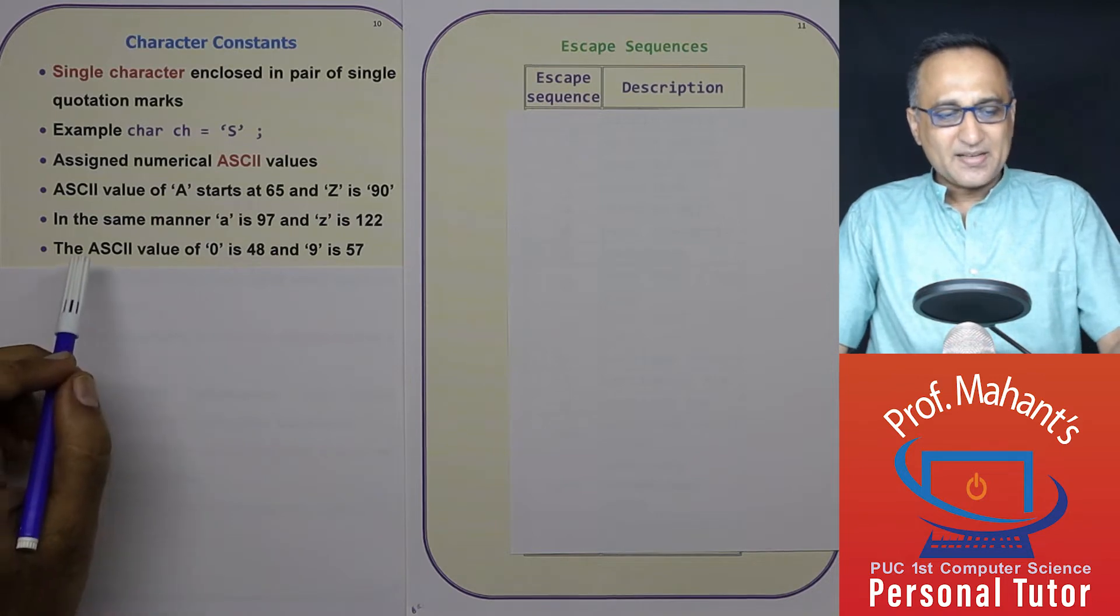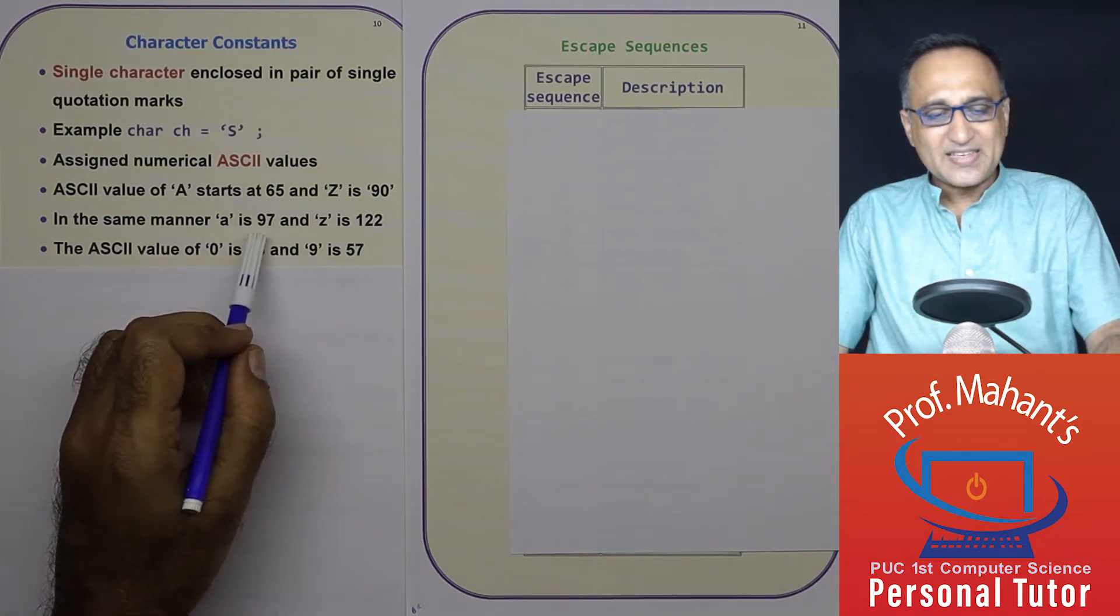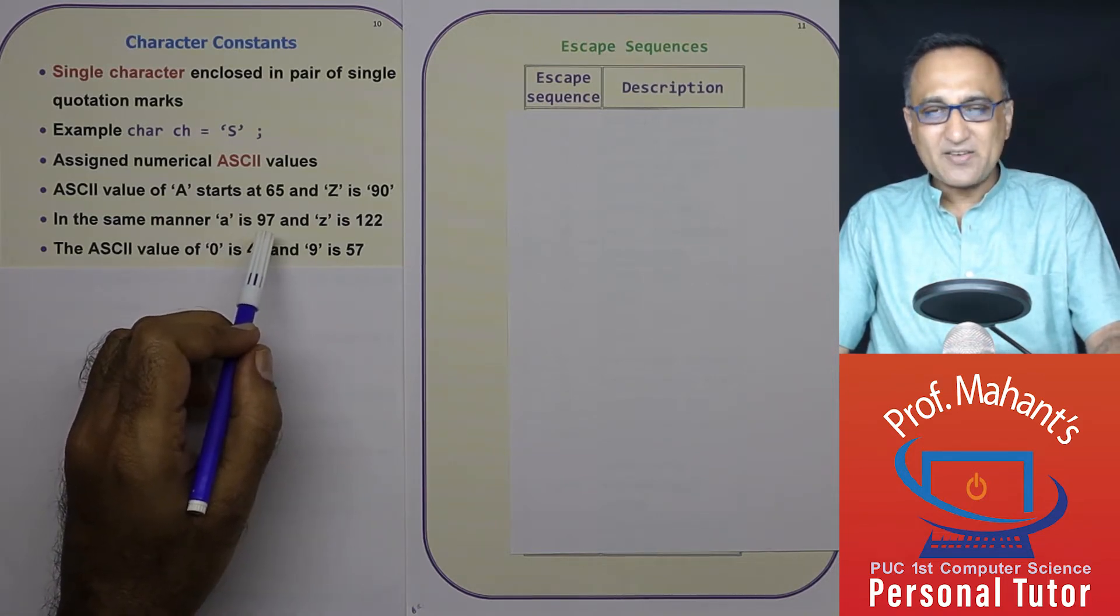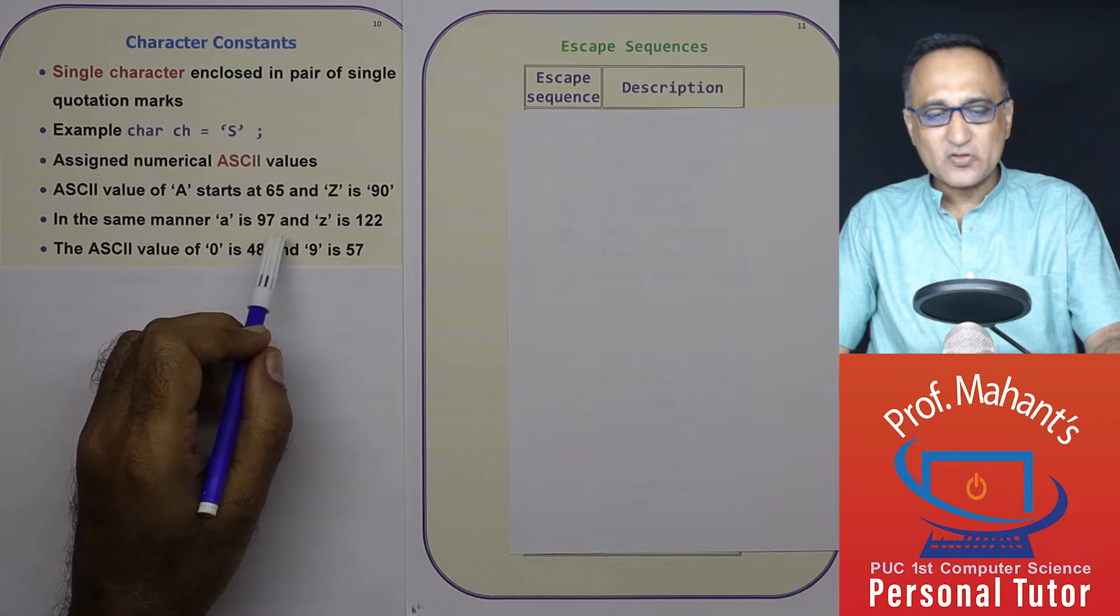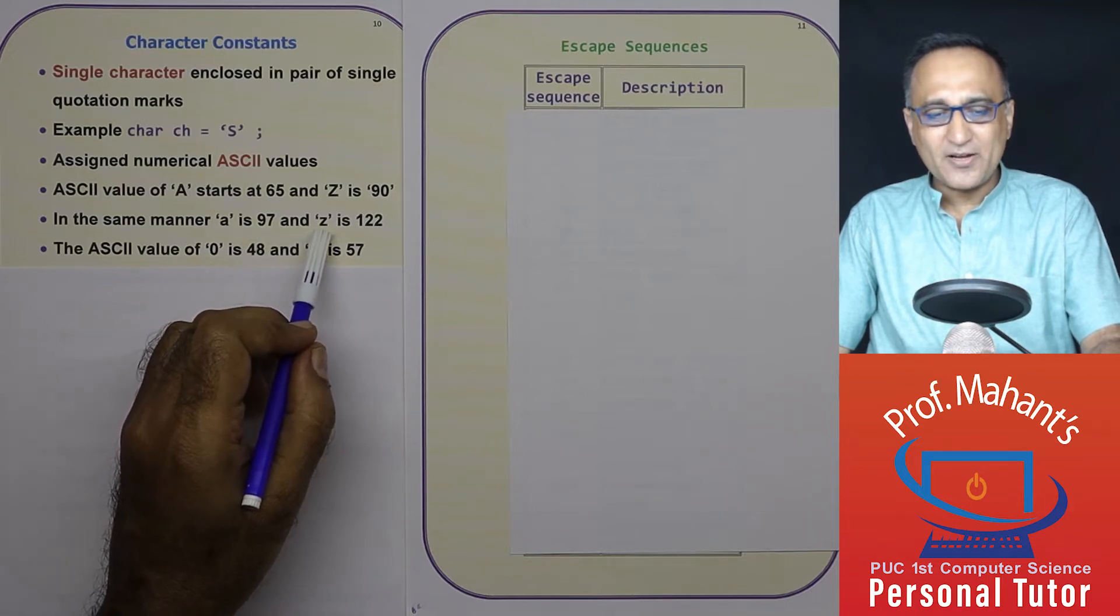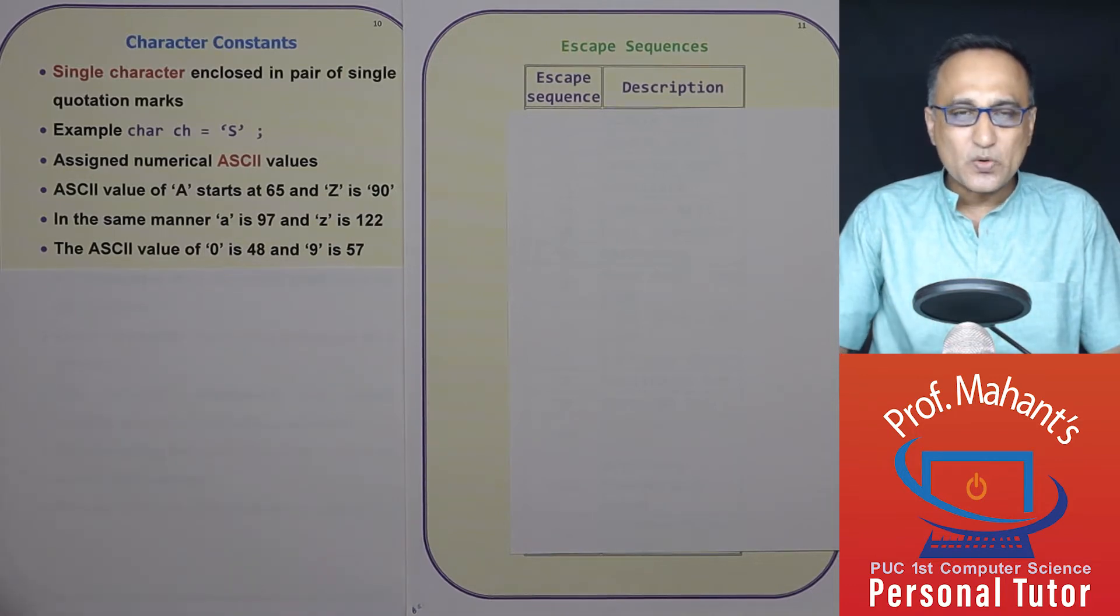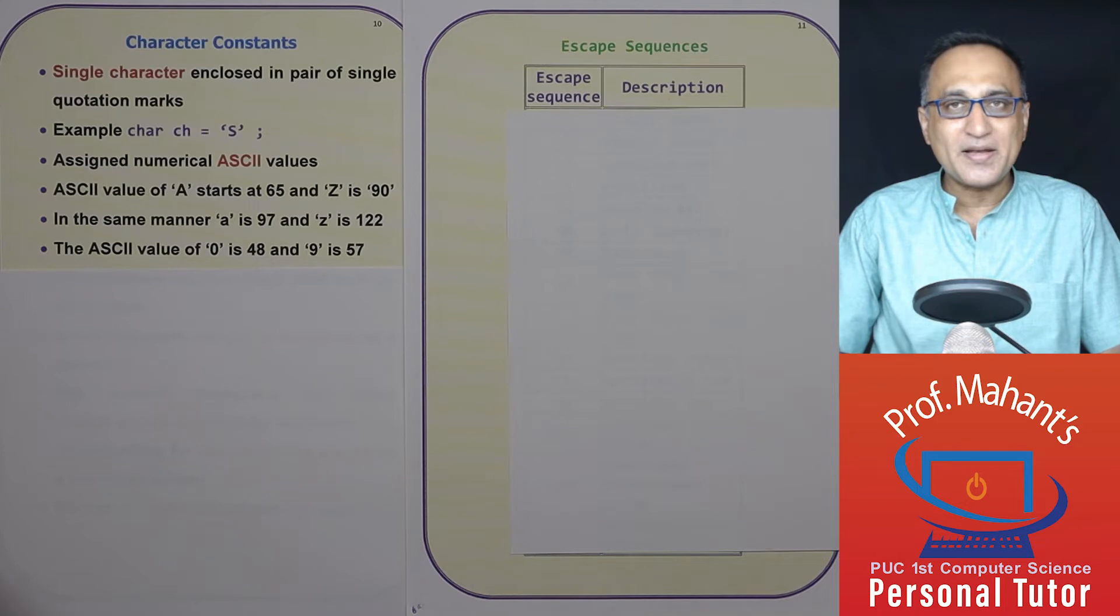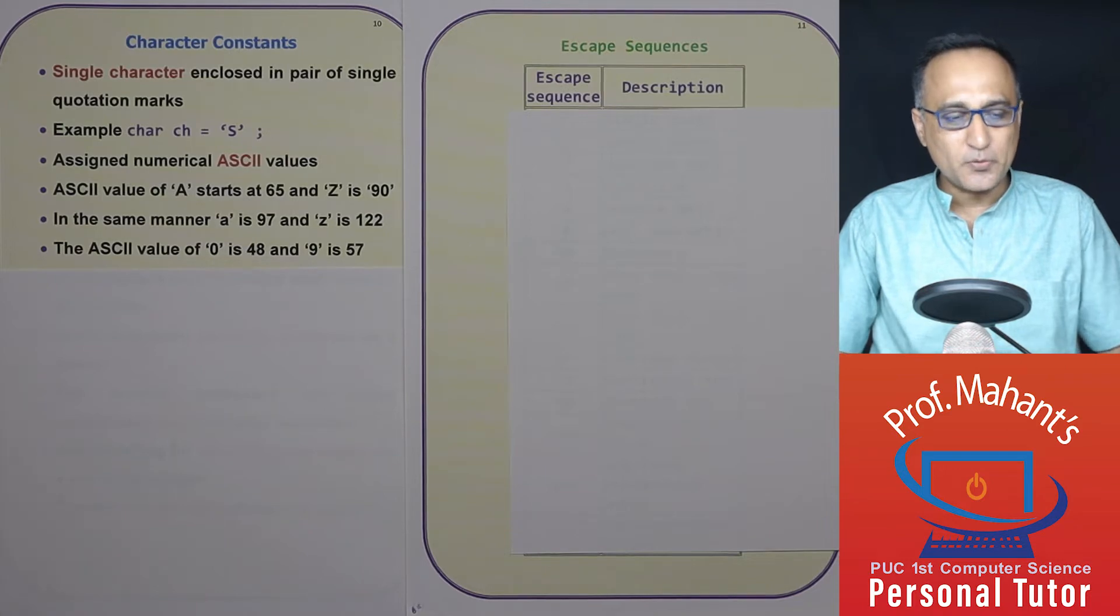In the same manner, the ASCII value of small a is 97, ASCII value of small b is 98, so on all the way till ASCII value of small z is 122. This 122 and 97 are in decimal. These are going to be converted into binary values and A and Z are going to be stored as their binary equivalents in the computer.